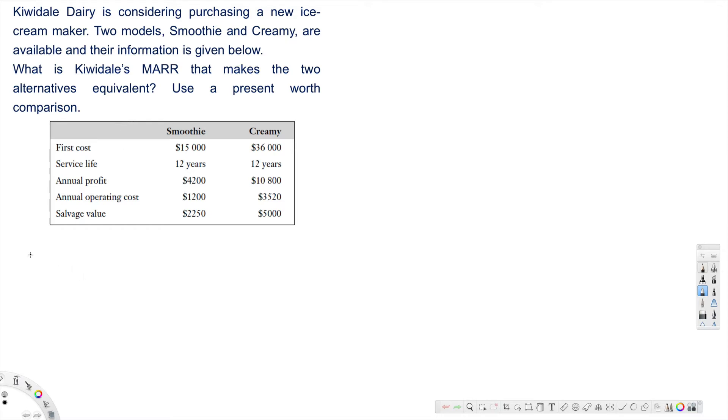Let's go ahead and do the present worth comparison. Present worth one, that's for Smoothie. First cost is $15,000, so I put negative $15,000. Plus, we have $4,200 annual profit - profit is positive. And then we have annual operating cost $1,200 - that's a cost, so negative $1,200.